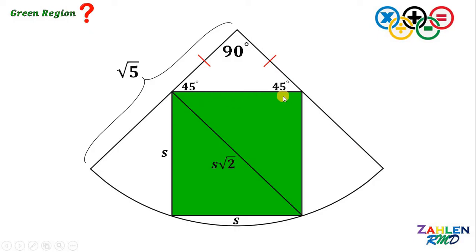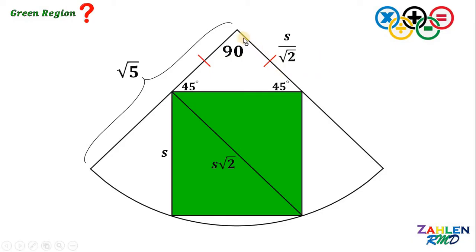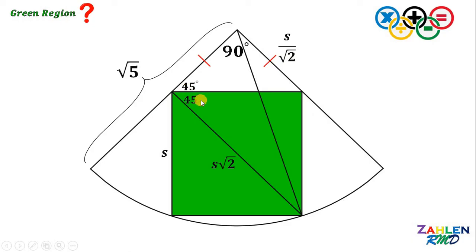Take note that this side is also S. Therefore, we can represent these two congruent segments in terms of S. Since the hypotenuse of this 45-45-90 triangle measures S, each leg measures S over square root of 2. From the center of the circle, let's draw a radius directly to the vertex of this square. This angle also measures 45 degrees, so 45 plus 45 gives us 90 degrees — therefore, this triangle is a right triangle.